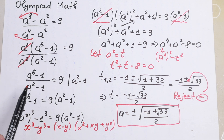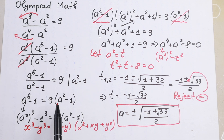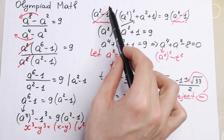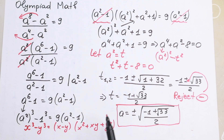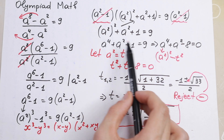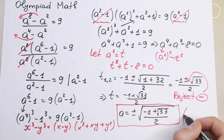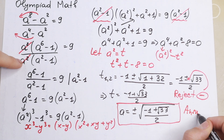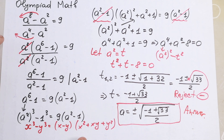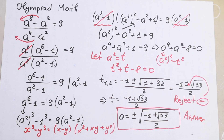So to summarize: first, factor out a squared; second, multiply both sides by the denominator; third, apply the difference of cubes to cancel the expression. This gives a quadratic equation via substitution, and our final answer is a = ±√((-1 + √33)/2). If you still have any questions, write them in the comments. Thank you so much for watching and subscribing — see you in the next videos.